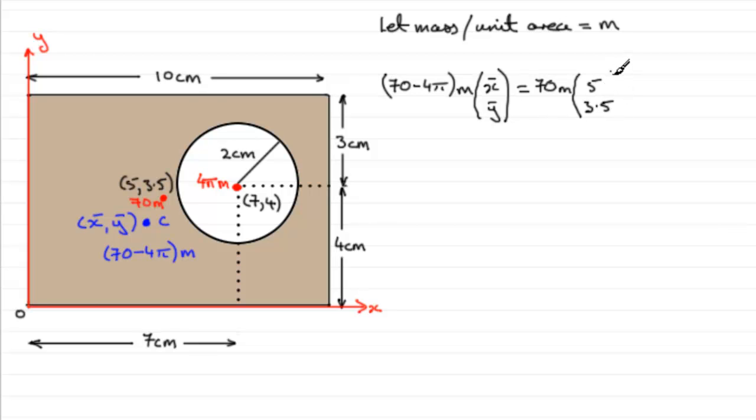Now, we are removing the circle, so it's got to be minus. If there's any other shapes in the problem you're doing that you need to remove, obviously you would minus them. In this case, it's minus 4π, the mass of what would be that circle. So put the m in, 4πm, and then multiply by (7, 4).